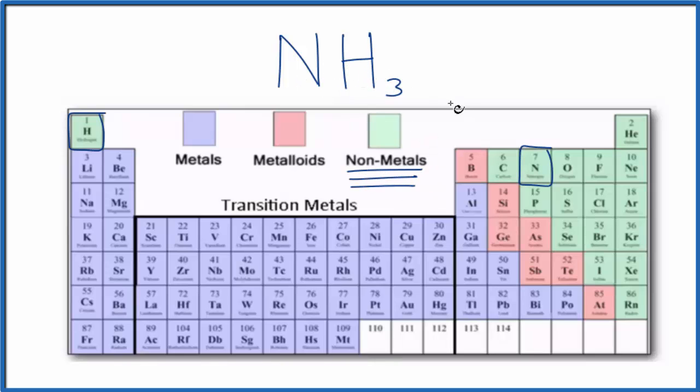So we have two nonmetals. That makes this a covalent or molecular compound. So ammonia, NH3, is covalent. But let's look at ammonia's structure for a moment.